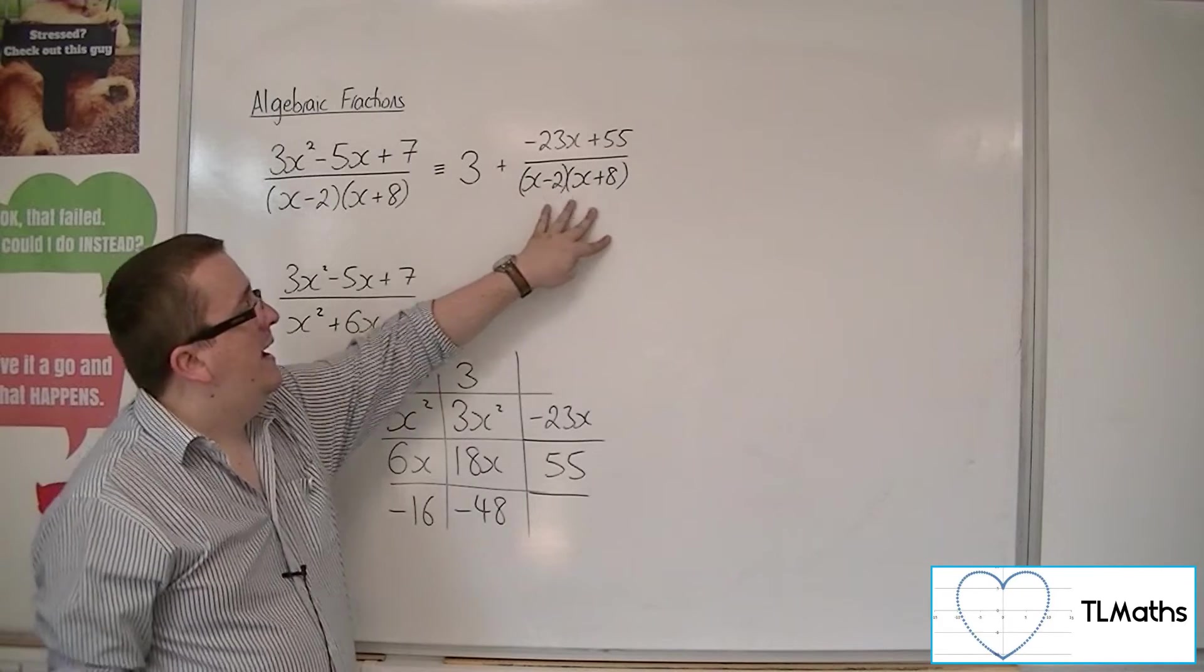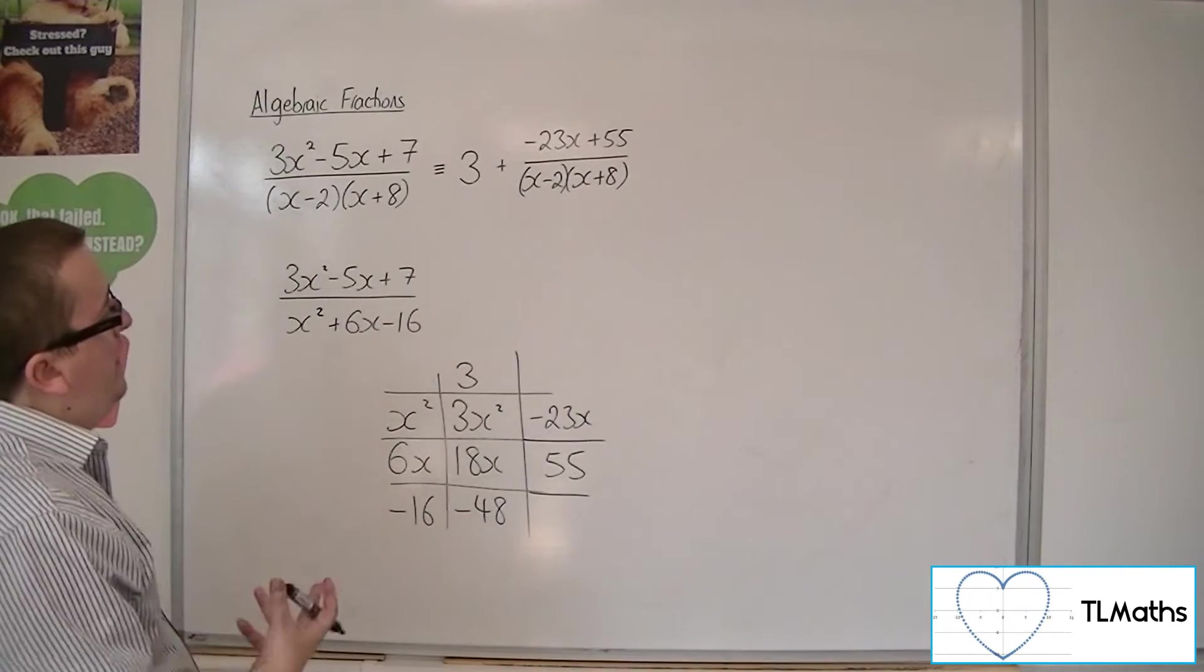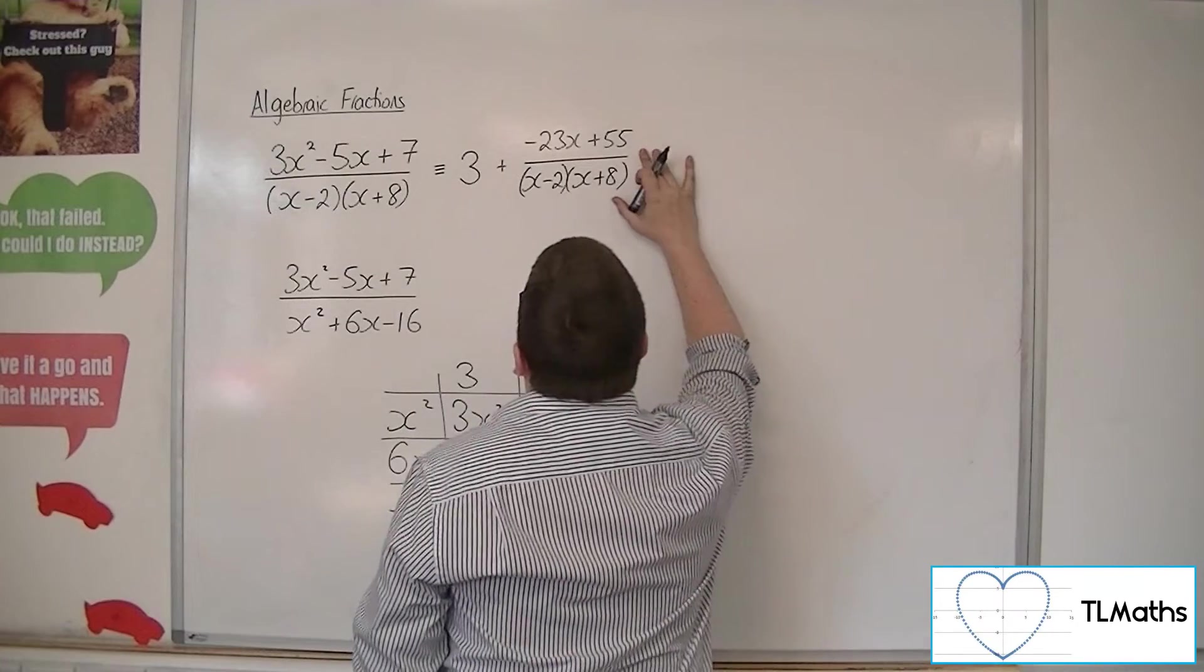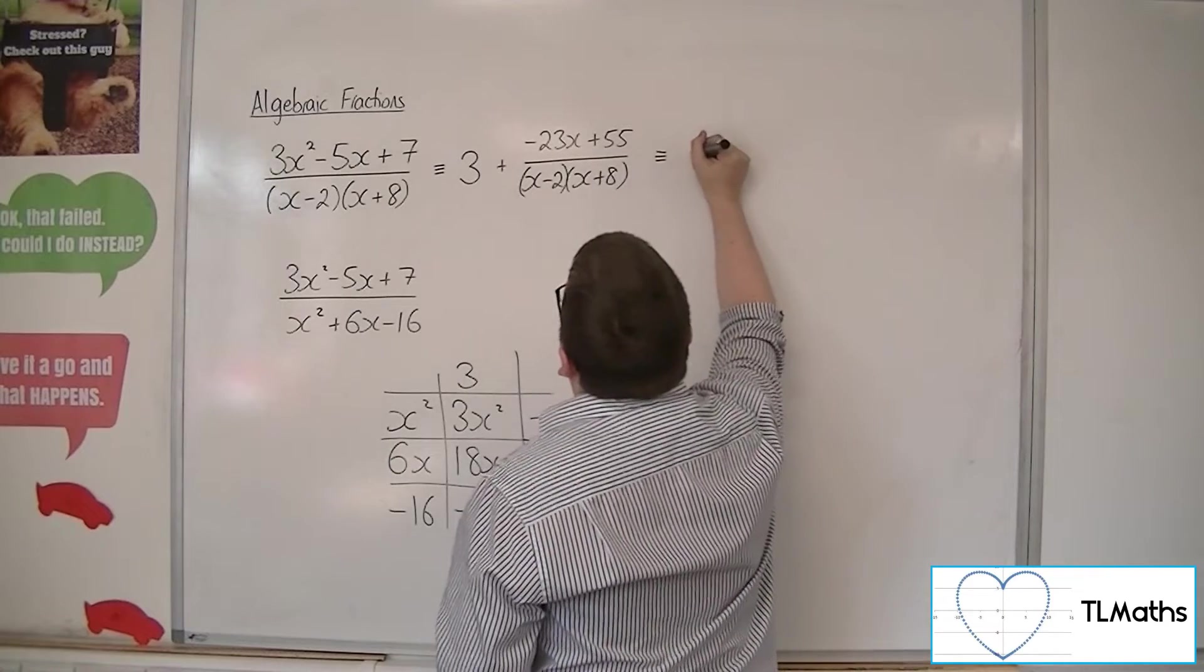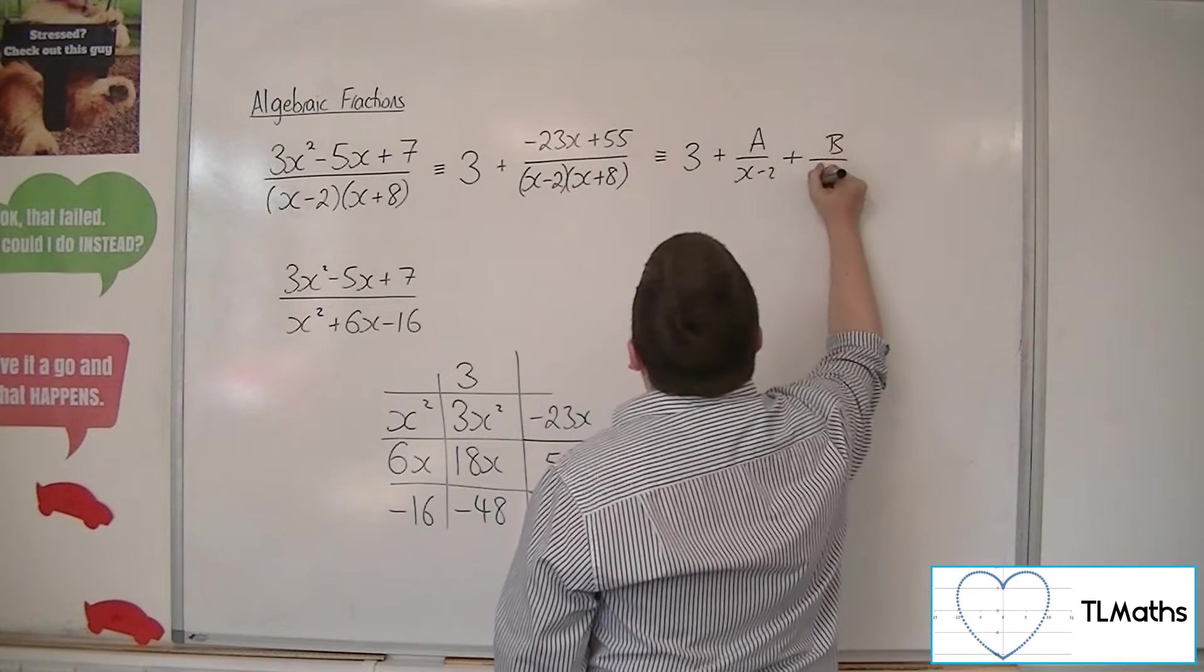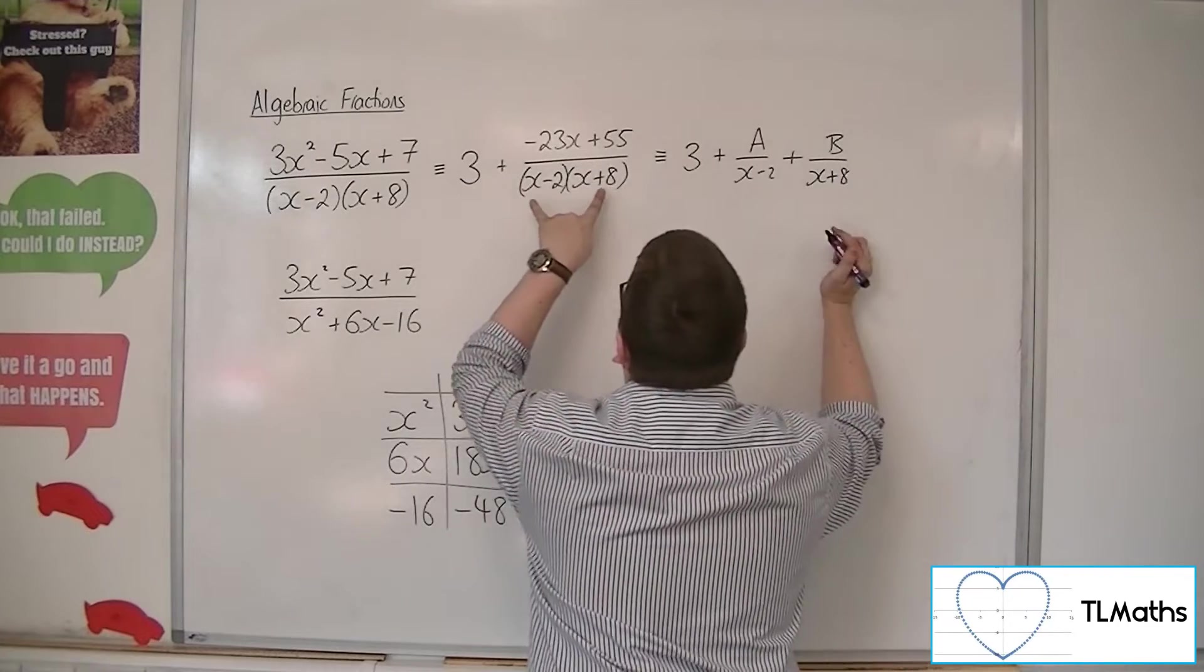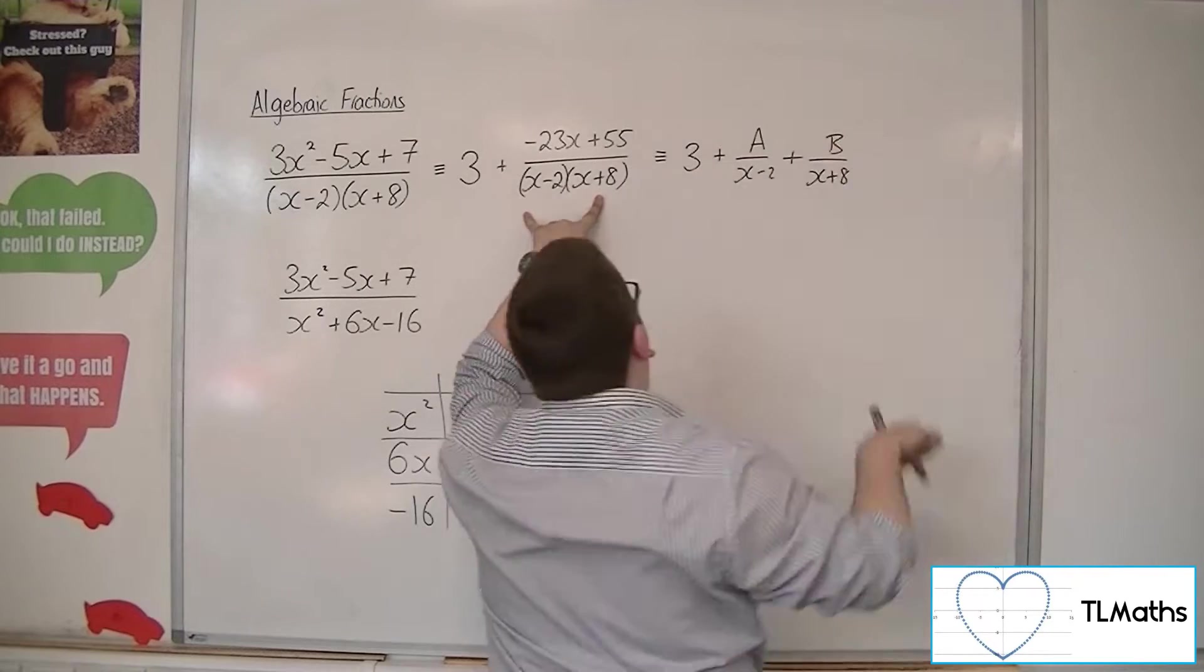And it is this right-hand fraction that you can then think, well okay, that is now a proper fraction. And we can do partial fractions straight on that. So we can say that it's equivalent to 3 plus a over x minus 2 plus b over x plus 8. So you can just focus your attention on writing this fraction as these partial fractions.